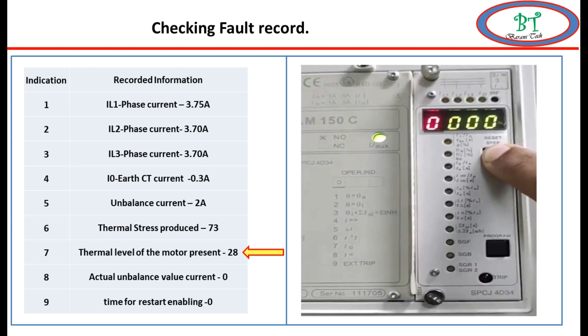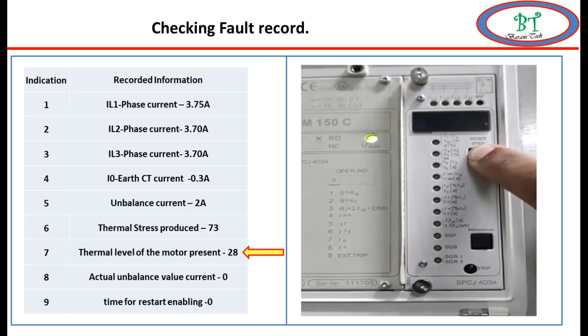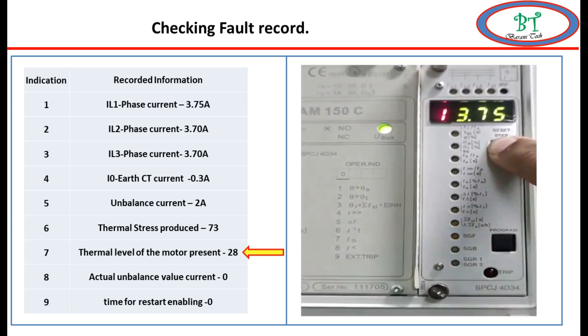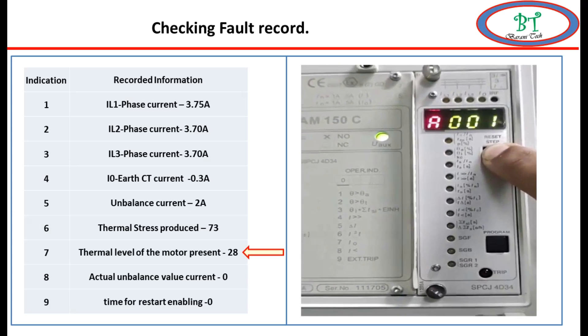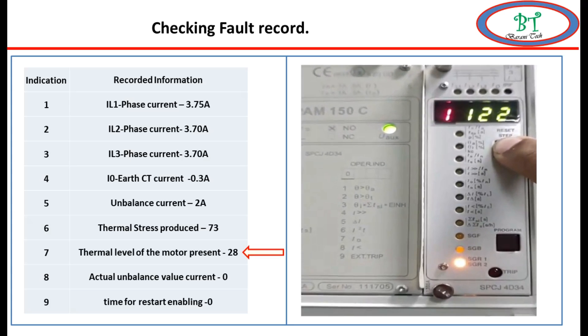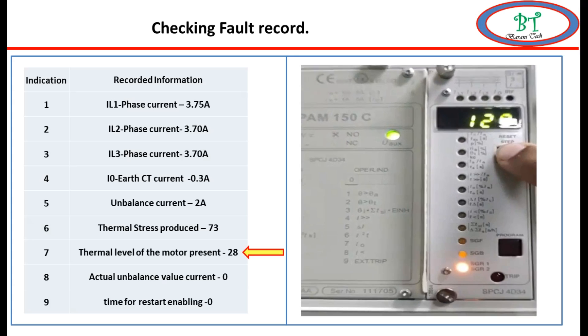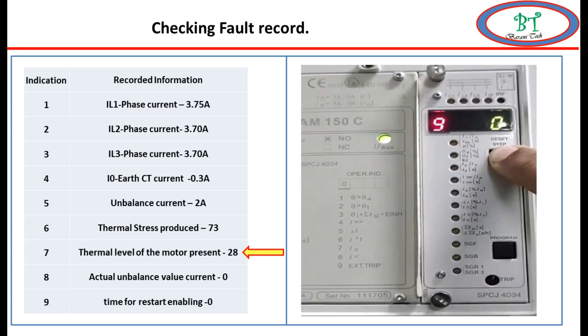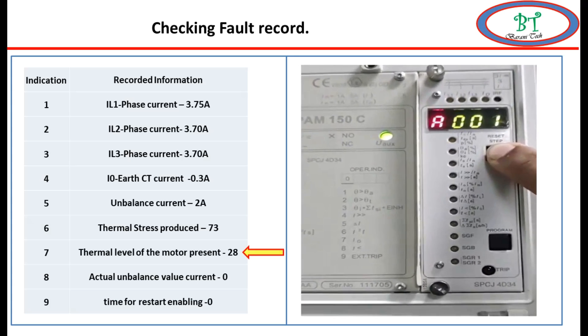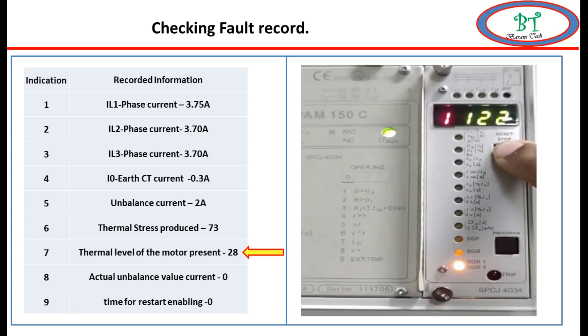So we don't know how much thermal value the relay has presently. Over the seventh point, we can see the present thermal value on the relay, which is helpful for us to know when we can reset the relay.